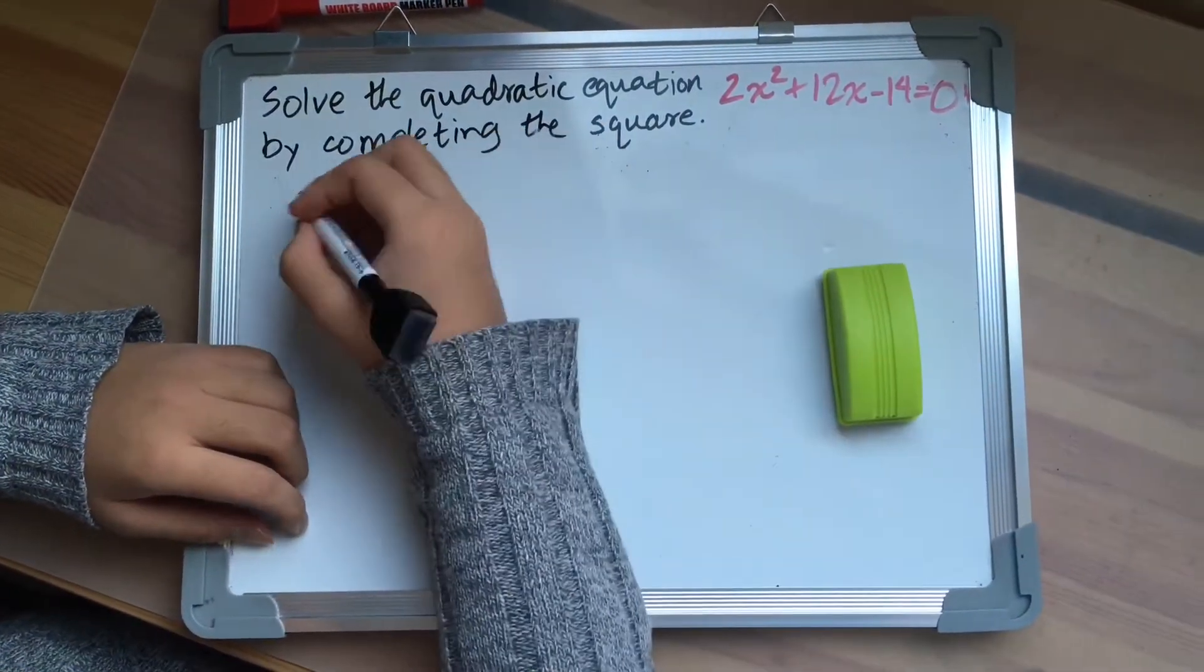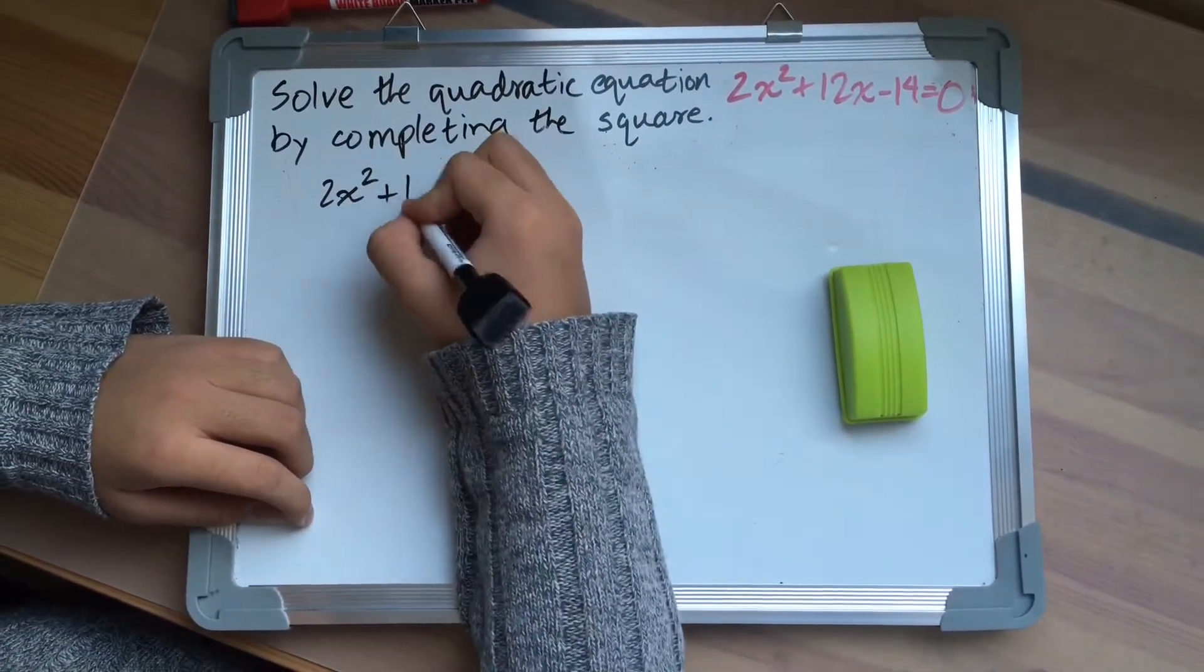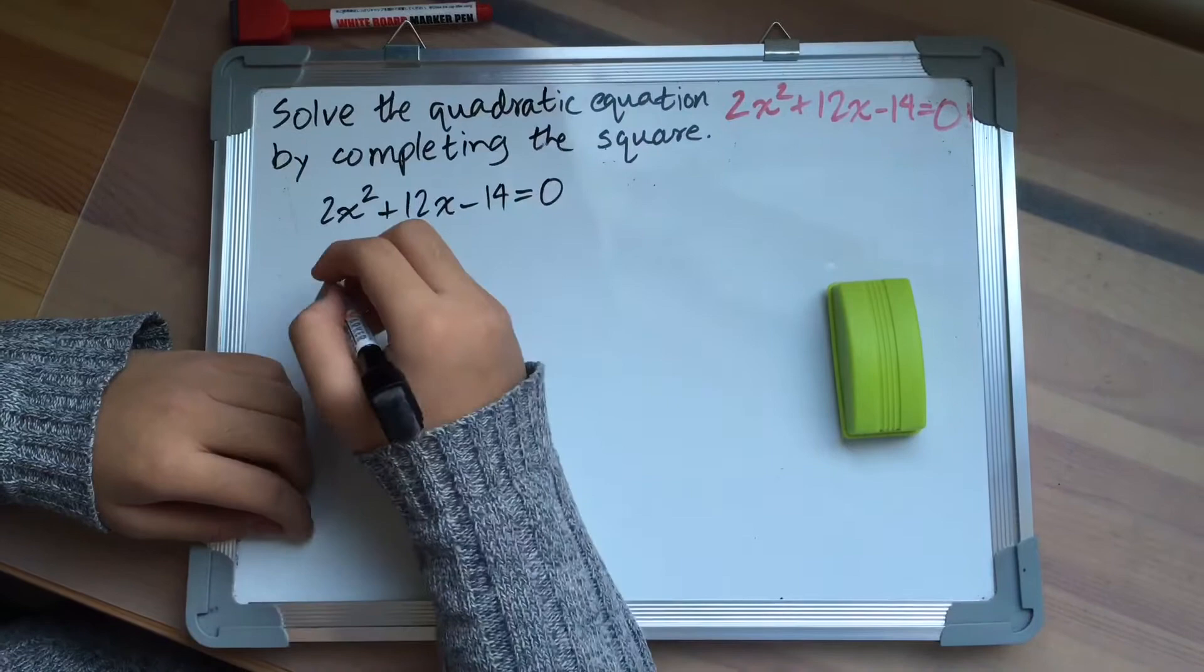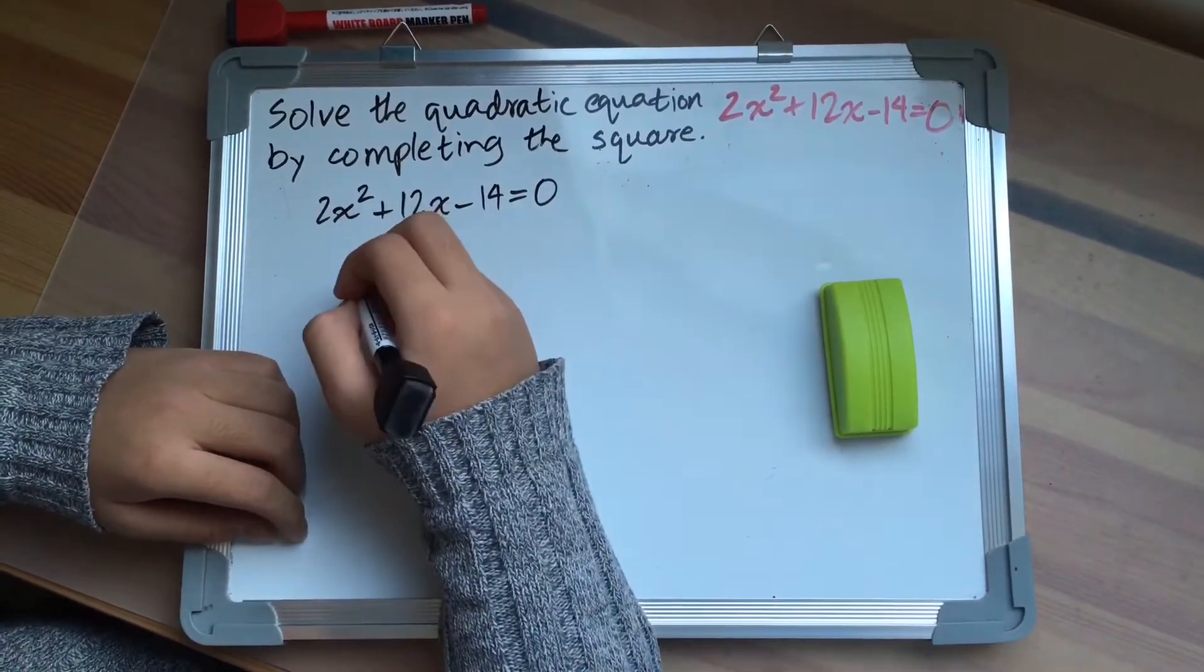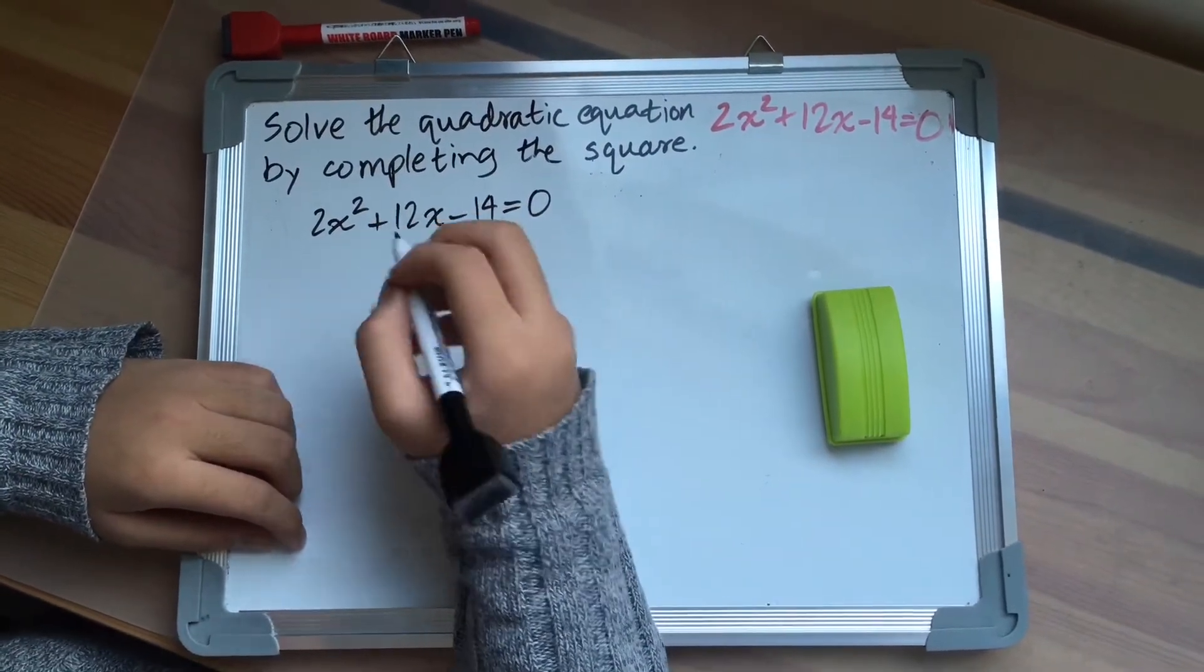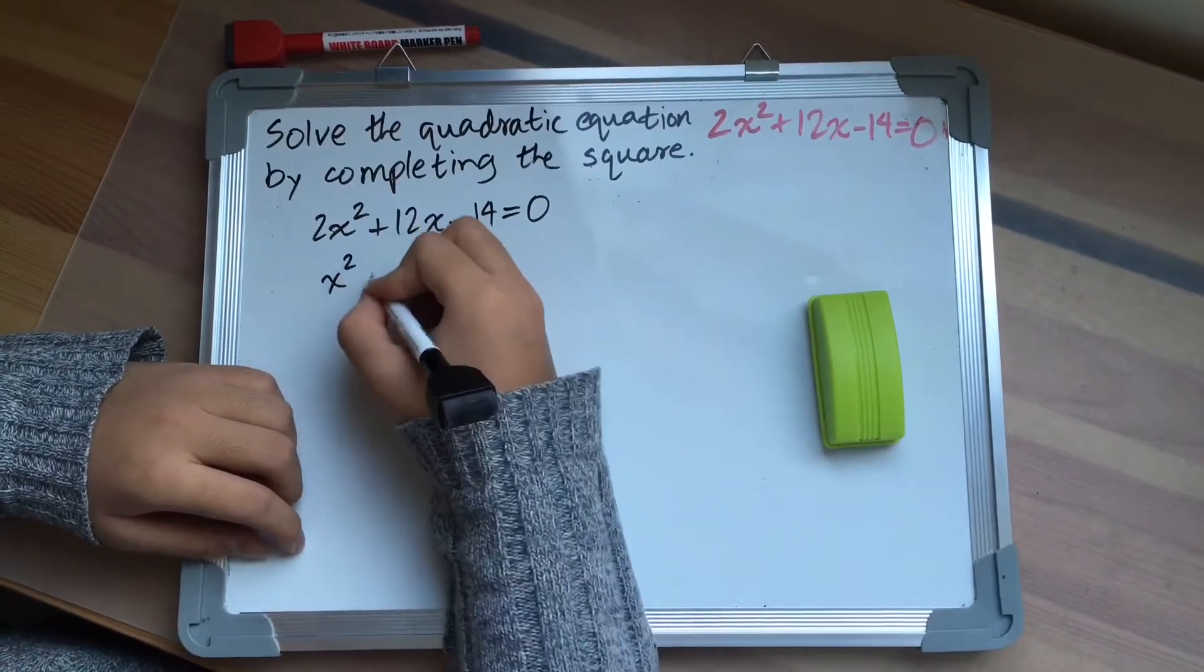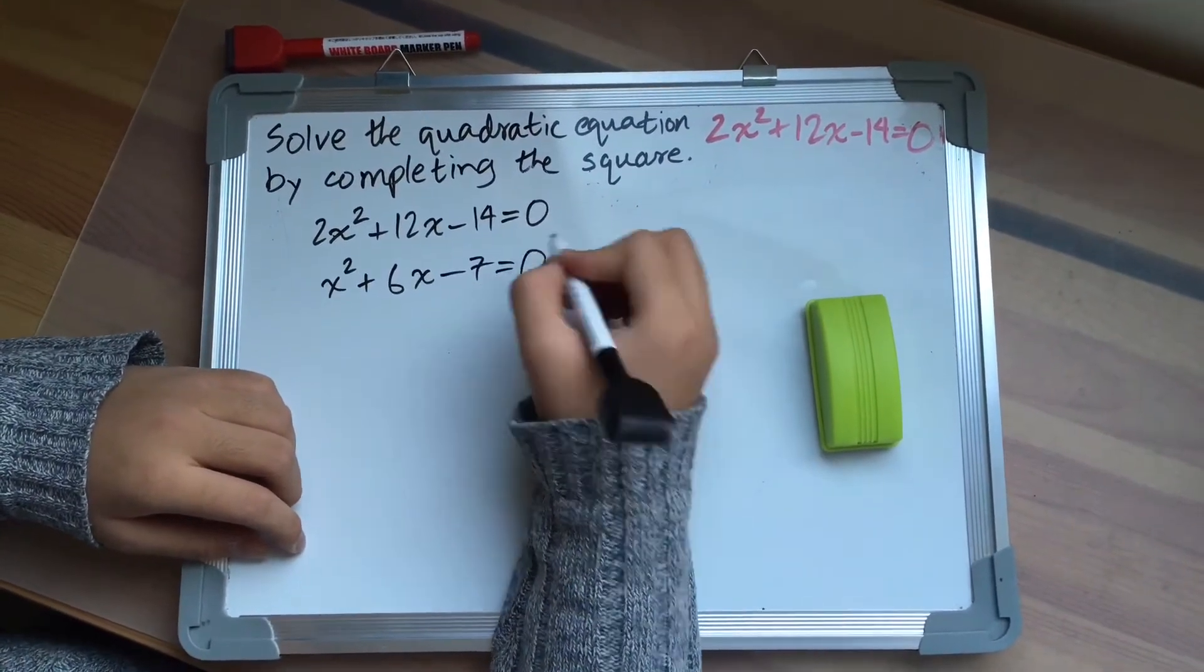So the given equation is 2x squared plus 12x minus 14 equals 0. Now first you have to make sure that the coefficient of x squared is 1. And in order to do that, divide each of the terms in the given equation by 2. And you'll get x squared plus 6x minus 7 equals 0.